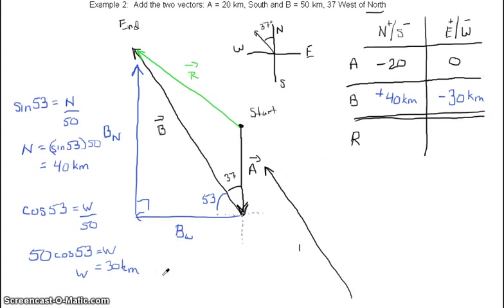Now we can take our parts and we can figure out what our result would be. So all together, if we go 20 south and 40 north, all together we would have gone 20 north. So 20 kilometers north and then 30 kilometers to the west.